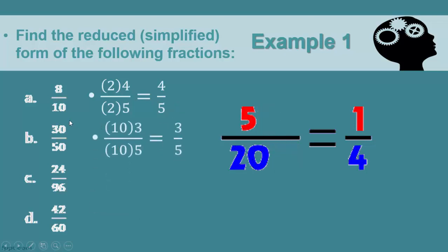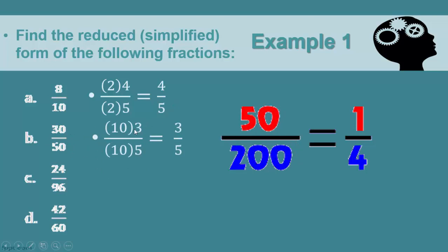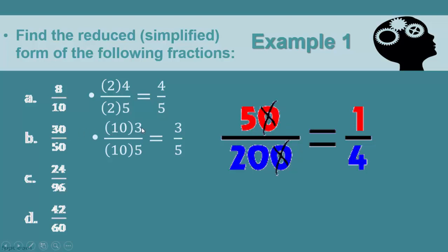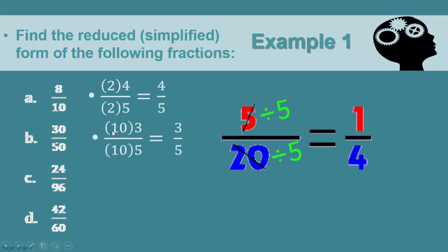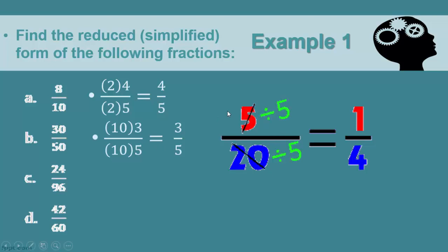In example B, ten goes into both thirty and fifty. So we factor out ten from thirty to get ten times three, and ten from fifty to get ten times five. We then cancel out the tens and get three-fifths.